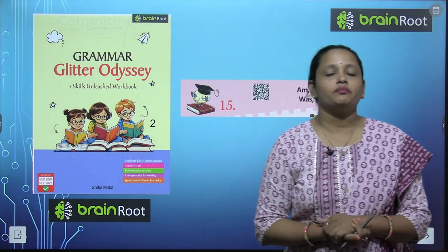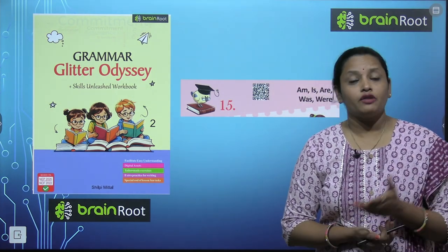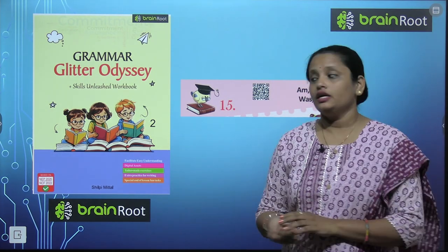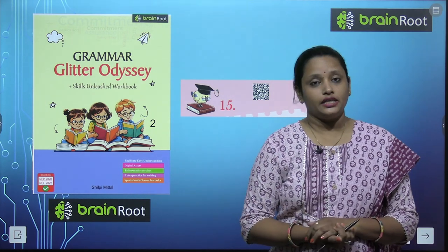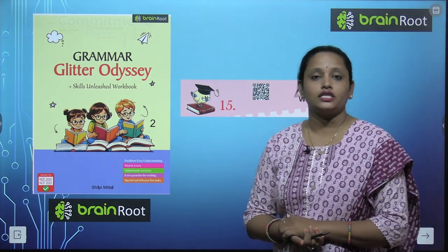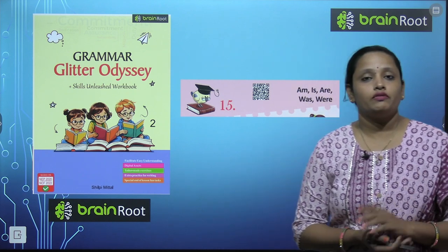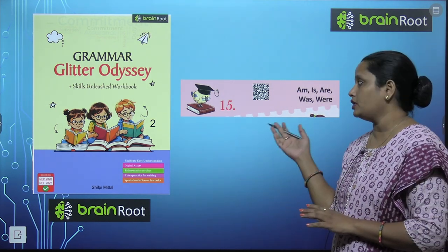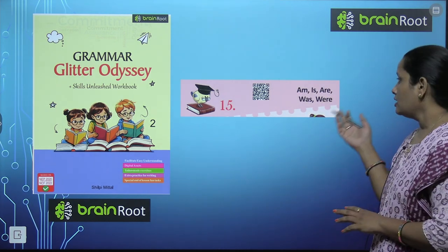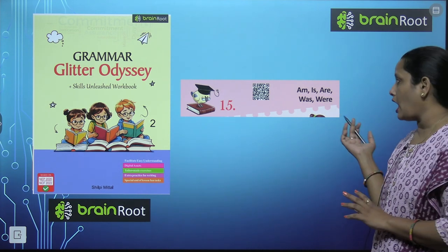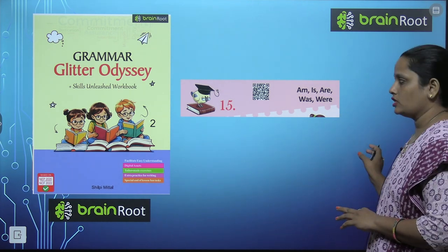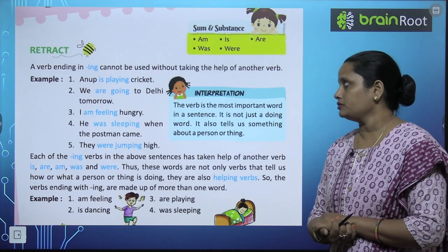Hello my dear kids, welcome back. I am Vandarayan. We are learning English grammar by Brain Root series and here is a book Grammar Glitcher Odyssey, book 2. Today we will start with chapter number 15 and the name of the chapter is 'is, am, are, was, were'. So let's start the chapter.